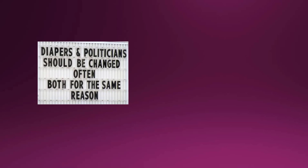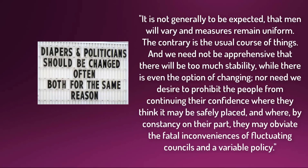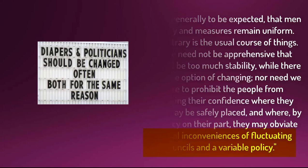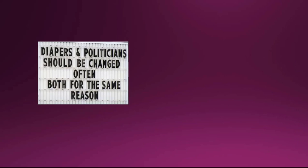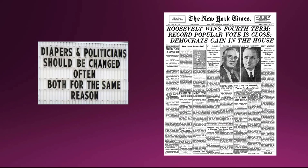Similarly, Hamilton argues in Federalist 72 against limiting the number of terms a person may serve as president. The longer a person were to hold the office of president, Hamilton argued, the more stable the country would be. Limiting the terms a president could be elected could lead to, quote, 'fatal inconveniences of fluctuating councils and a variable policy,' end quote. As we know, after President Franklin D. Roosevelt served four terms as president, Congress passed the 22nd Amendment limiting each president to a term limit of two elected terms.